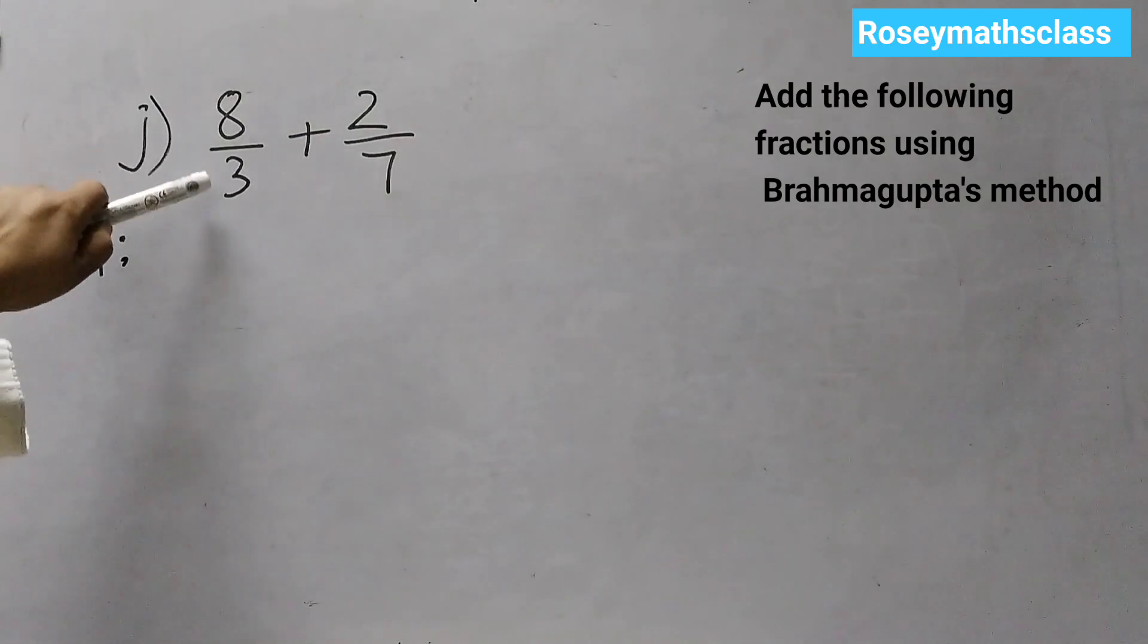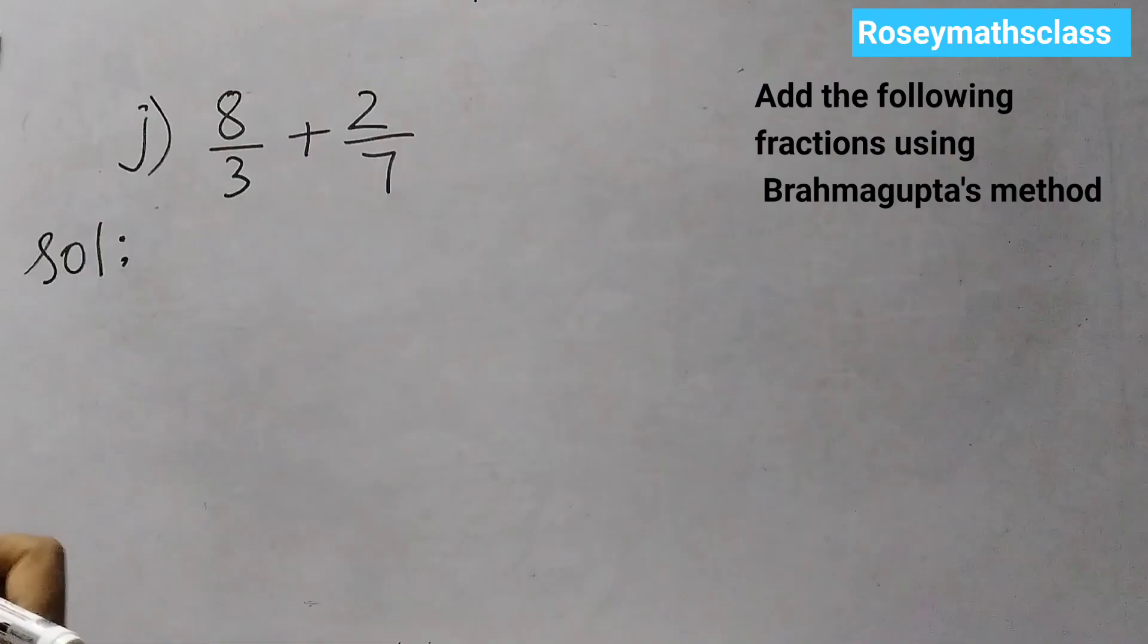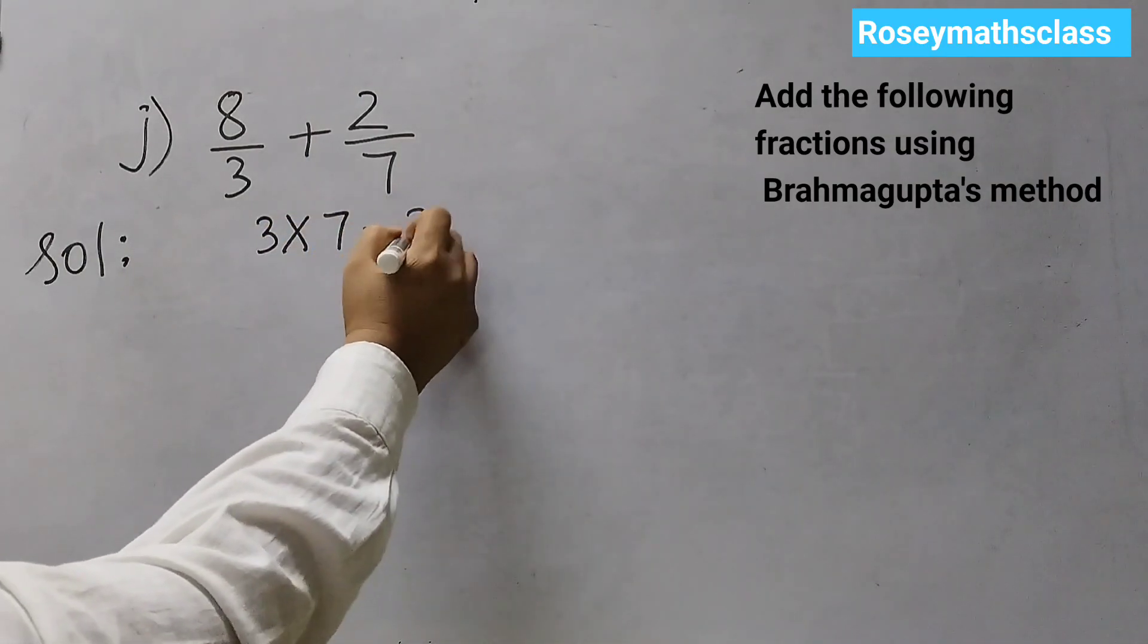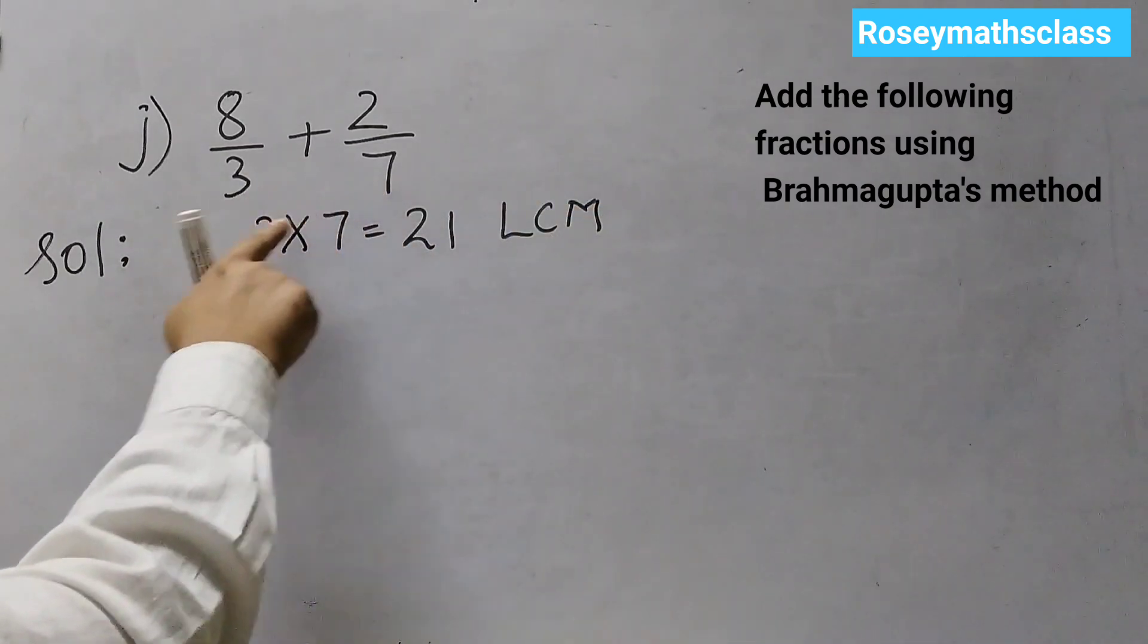Here we have 8 upon 3 plus 2 upon 7. Now, you see here we have different denominators. So, we need to find the LCM, that is the lowest common multiple. 3 into 7 is 21. So, this is the LCM of the denominators.